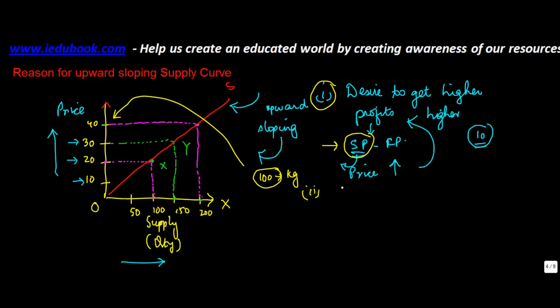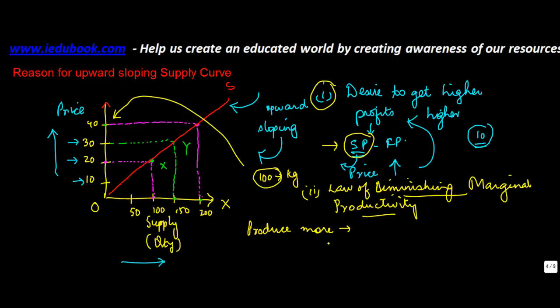The first reason, actually. Then the second reason. The second reason is the law of diminishing marginal productivity. Now what this law means is that as you produce more, the variable cost increases.